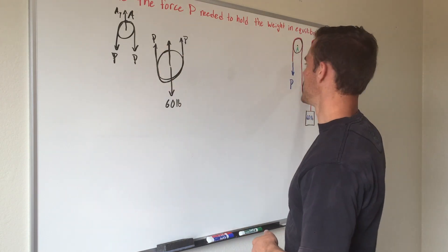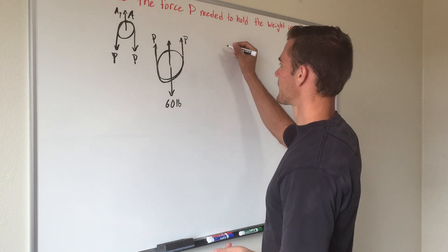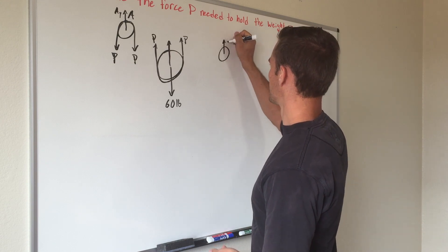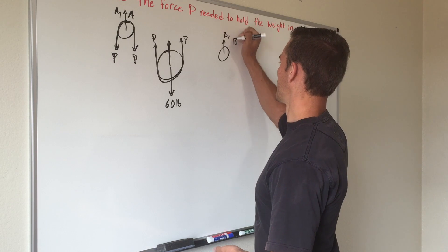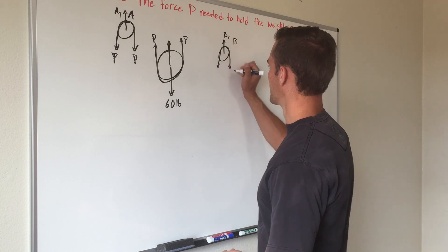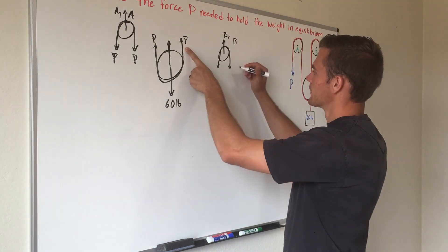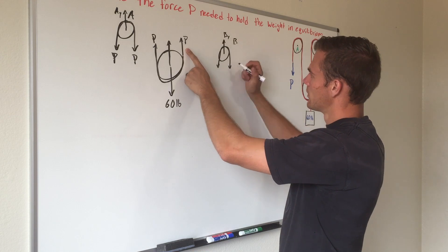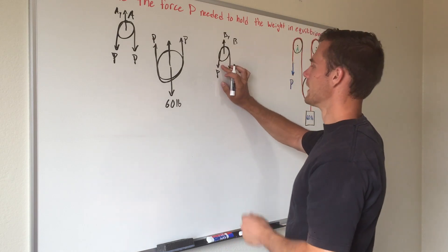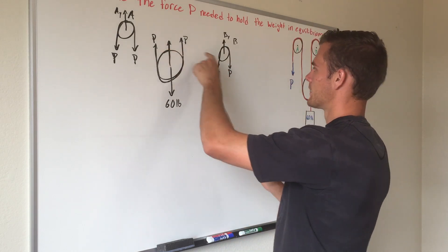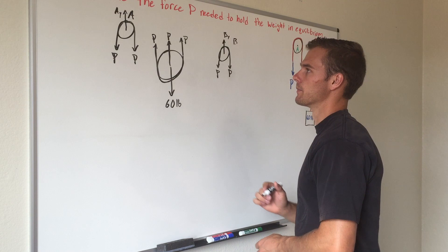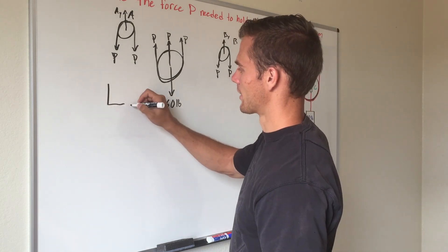You can probably already guess what the tension will be at pulley B — since the rope just comes over it, it's also going to be P. Drawing the free body diagram of pulley B, we have our reaction force (which we won't focus on), and the rope on both sides. Opposite direction, equal magnitude — so both sides are P. The two parts of the rope connect together, so that segment is also P.